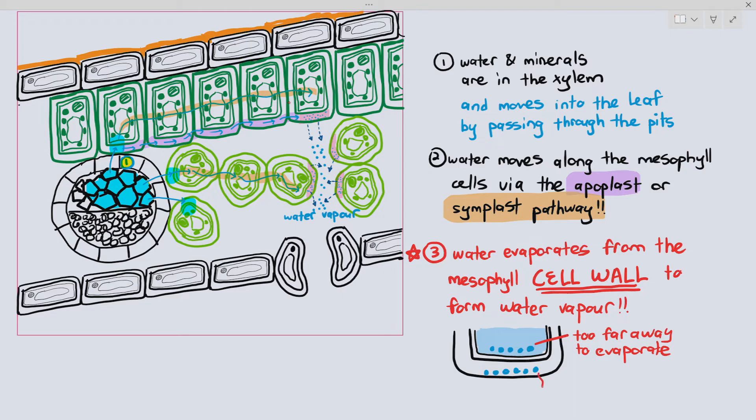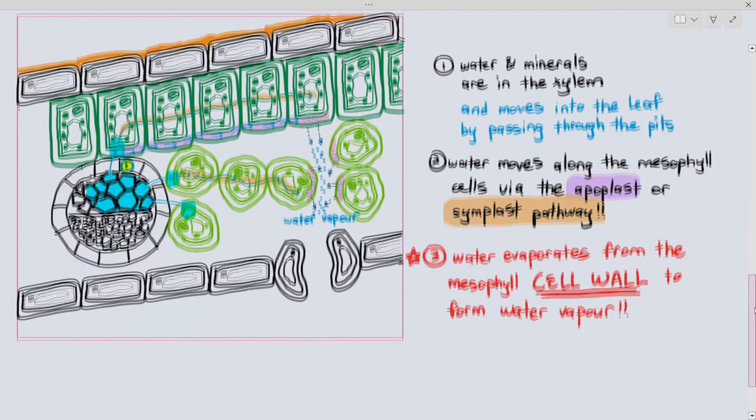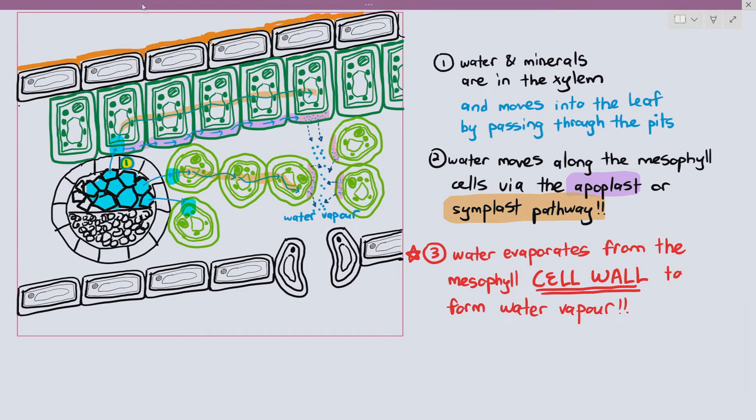So that is an extremely significant point. When you mention in the exam, you have to say that the water evaporates from the mesophyll cell wall. Once the water actually evaporates from the mesophyll cell wall, they are just diffusing through the airspace of the leaf, those empty spaces within the leaf.